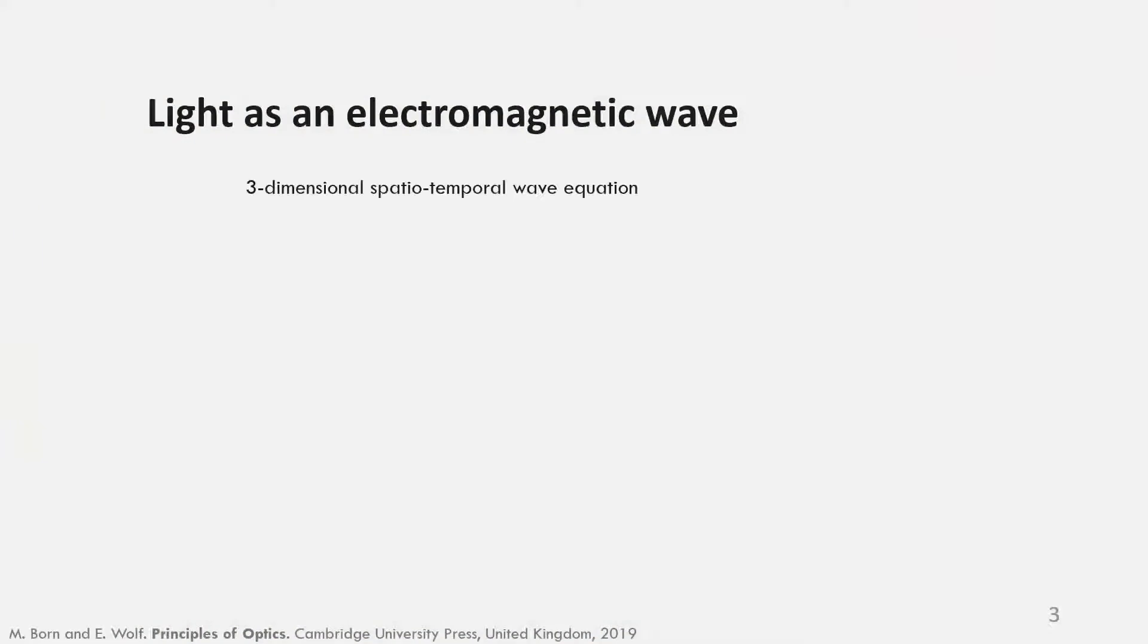Light can be described as an electromagnetic wave using this three-dimensional wave equation. A simple solution is given by this, where a is the amplitude and phi is the phase.